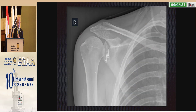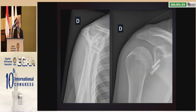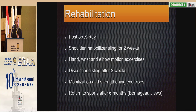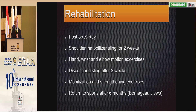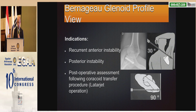After that, you close the capsule and take x-rays after the procedure. For rehabilitation, we take x-rays in the patient's room. The mobilizer is used for two weeks, with hand, wrist, and elbow motion exercises. They continue x-ray follow-up after two weeks, with mobilization and stretching exercises, and usually return to sport after six months. We also take Bernageau views, which are indicated for recurrent anterior instability, posterior instability, and postoperative assessment following coracoid transfer.